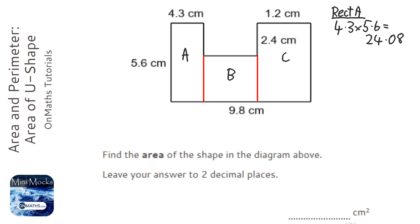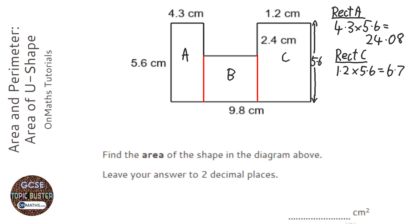I'm going to do rectangle C next. Doesn't matter which order we do these. The height is also 5.6 because it's 5.6 on the other side. So I'm going to do 1.2, which is the width, times the height, which is 5.6. That's 6.72.